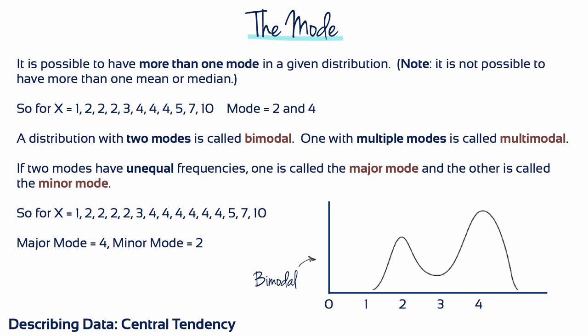Some datasets have more than one specific mode, where two or more different scores are the most common. When a distribution of scores has one mode, we refer to it as unimodal. When a distribution has two modes, we call it bimodal. When a distribution has more than two modes, we call it multimodal.